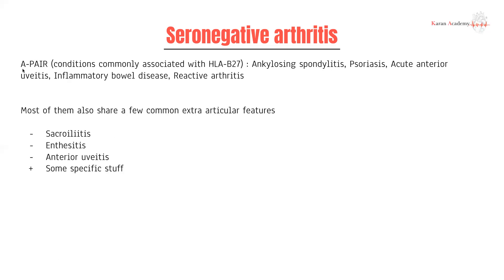A good mnemonic for conditions associated with HLA-B27 is PAIR: ankylosing spondylitis, psoriasis, acute anterior uveitis, inflammatory bowel disease, and reactive arthritis. Most of them also share a few extra-articular features: sacroiliitis or inflammation of the sacroiliac joints, enthesitis which is inflammation of the tendons, anterior uveitis, and some specific features depending on which condition we're talking about.